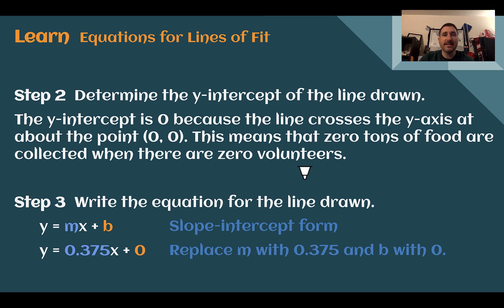Now I can put everything together. Plugging my values into slope-intercept form, I have a final equation of y equals 0.375x plus 0. And since the y-intercept is 0, we don't really even need to write that last part. We could have just said y equals 0.375x.